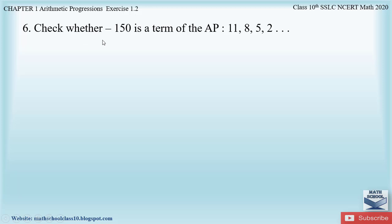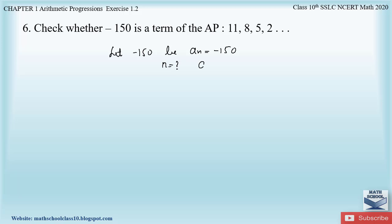Here we have to determine whether -150 is a term of this AP or not. Let us first assume: let -150 be the nth term of the AP. We don't know which term of the AP it is, so we are initially assuming it to be the nth term, and we have to find out the n value to check whether -150 is a term of the AP or not.